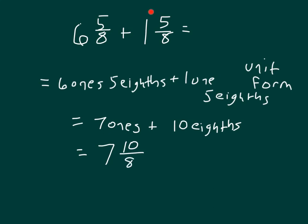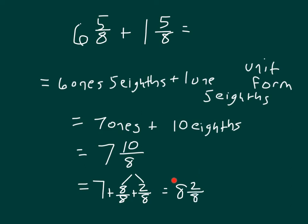The difference here is that we have ten eighths, which is more than one. We can decompose ten eighths into eight eighths — which is one whole — along with two eighths, so we have seven plus one, which equals eight and two eighths. Eight and two eighths is not in simplest form, so putting it into simplest form gives us eight and one fourth as our answer.